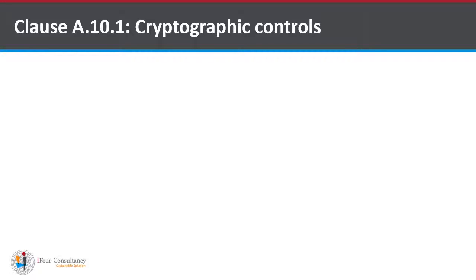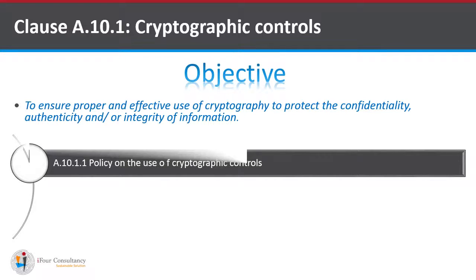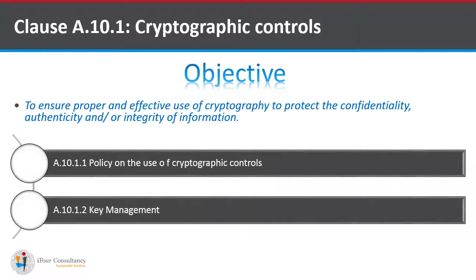The clause number A.10.1 cryptographic control objective talks about ensuring proper and effective use of cryptography to protect confidentiality, authenticity, and/or integrity of information. It has been divided into A.10.1.1, i.e., policy on the use of cryptographic control, and A.10.1.2, i.e., key management. Now let's see what's in them individually.